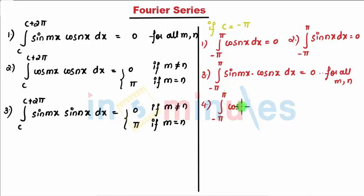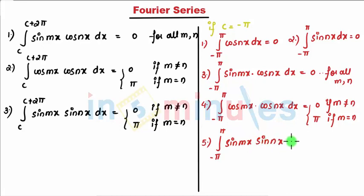Fourth is minus π to π: integral of cos(mx) times cos(nx) dx equals zero if m is not equal to n. If m equals n, your value will be π. And fifth, for m equal to n, minus π to π: integral of sin(mx) times sin(nx) dx equals zero if m is not equal to n. If m equals n, then you say that to be π. These are formulas which we will be using in determining coefficients or for solving sums.